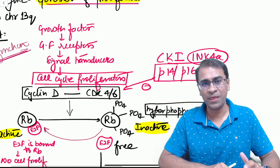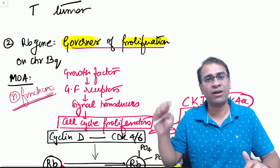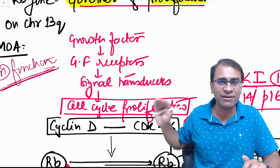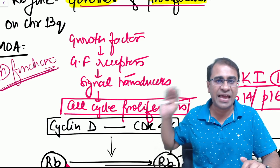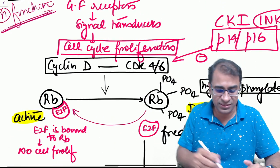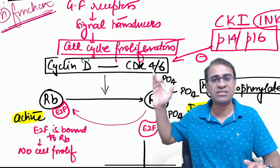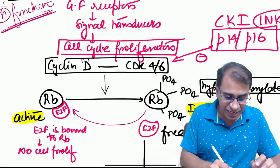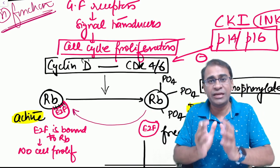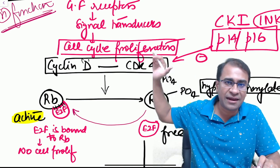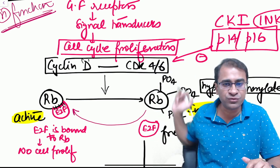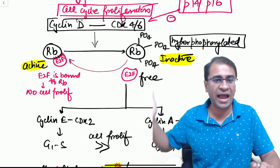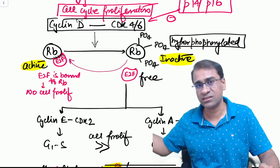Next comes the RB gene, called governor of proliferation. Whenever there's a growth signal for proliferation, what activates are cell cycle proliferators: cyclins D, E, A, and B. The first one to activate is cyclin D which will combine with CDK4 and CDK6. Cyclin D will act on the RB gene on which the E2F is bound. E2F is elongation factor 2. The moment the cyclin D acts on it, the E2F becomes free, and the moment E2F becomes free, it starts causing proliferation both at G1-S and G2-M by activating other cyclins like cyclin E and cyclin A.